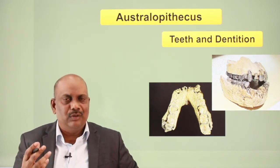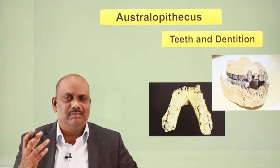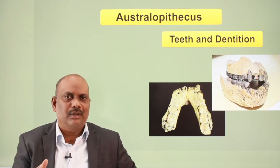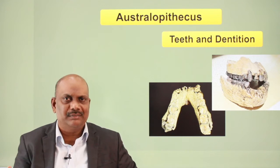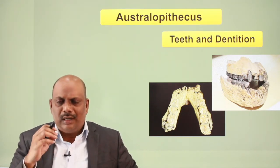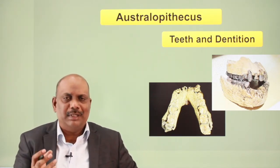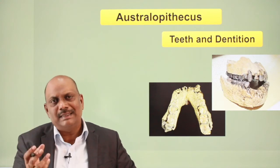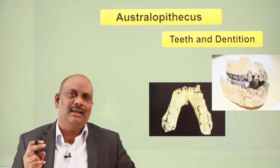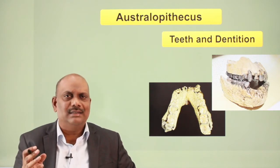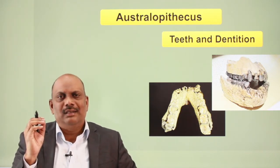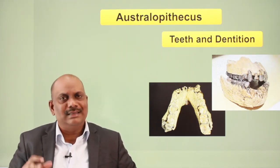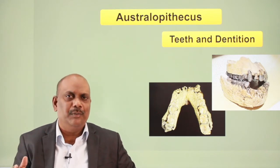Furthermore, we also know that because of the gigantic proportion of the robust, it could not adapt to the changing climate and changing environment. The study of the dental aspects of Australopithecus reveals a number of information. It is a mix of both ape-like and human-like characters. There are few characters in the Australopithecus dentition which are truly human, and at the same time, there are also few primitive characters.